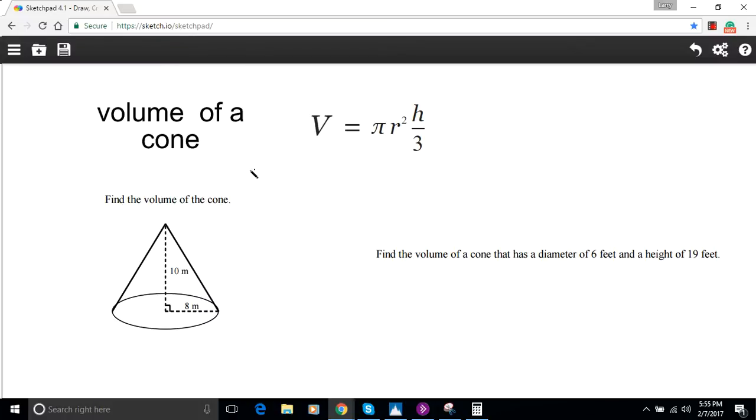In these problems we are trying to find the volumes of cones. The formula for the volume of a cone is the area of the circle on the bottom times the height, all divided by three. So it's one-third of the area of the circle times the height.